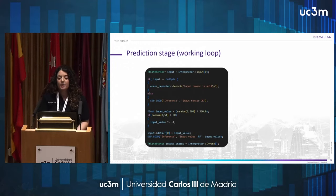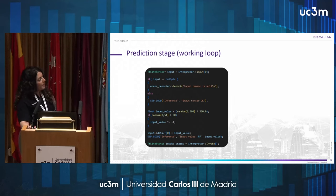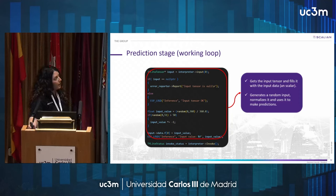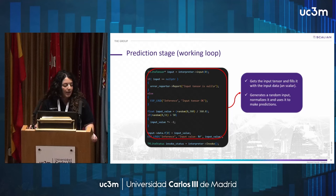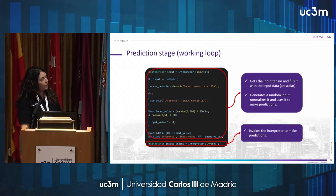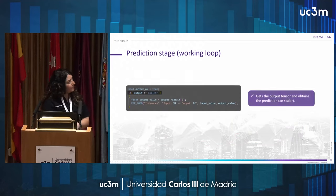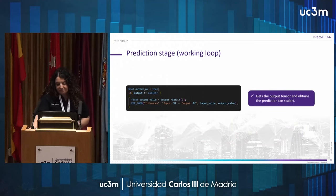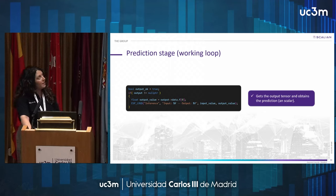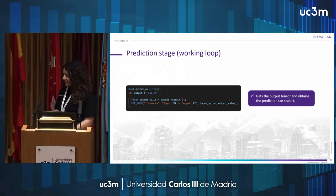Regarding the loop section: once the application and device are configured, we can start making predictions. The predictions are made at four-second intervals in our case. In this part of the code, first we get the input tensor and fill it with the input data. Then we generate a random input, normalize it, and use it to make predictions. We then invoke the interpreter to make predictions, and finally, through the output tensor, we obtain the resulting predictions. Now Alejandro will share the results.